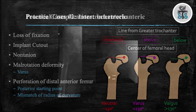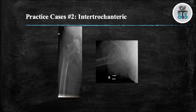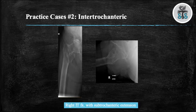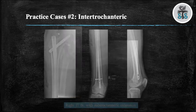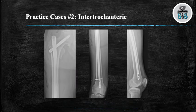We will now go over some practice cases. Case 2: We have two views, AP and cross-table lateral of a right hip in a skeletally mature individual, demonstrating a right intertrochanteric hip fracture with subtrochanteric extension. How would you fix this fracture? This fracture has at least one characteristic that makes it unstable, therefore it was treated with a long cephalomedullary nail.